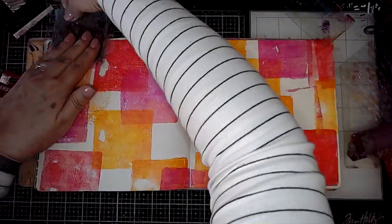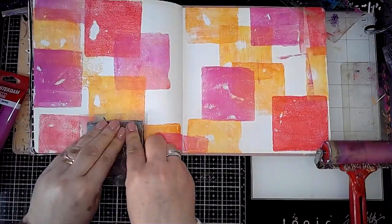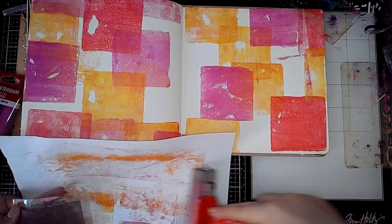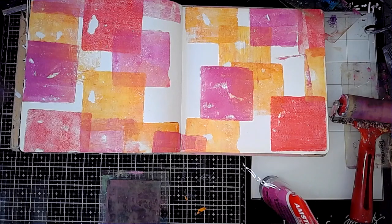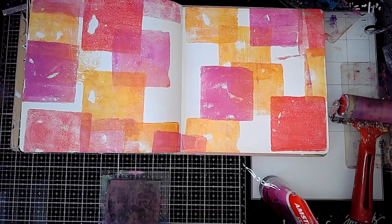There would have been a layer of gesso on the page as well before I started. So I've also used Dina Wakeley Lemon and then the Amsterdam Acrylic in Permanent Red Violet Light.